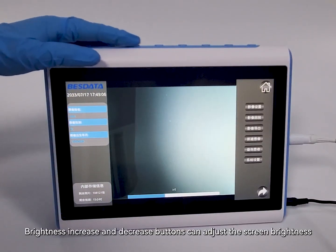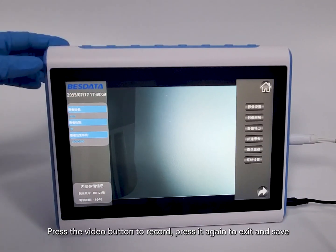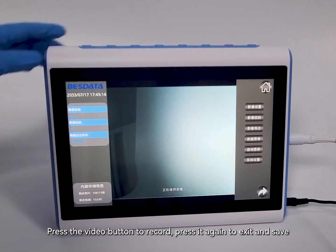Brightness increase and decrease buttons can adjust the screen brightness. Press the video button to record, press it again to exit and save.